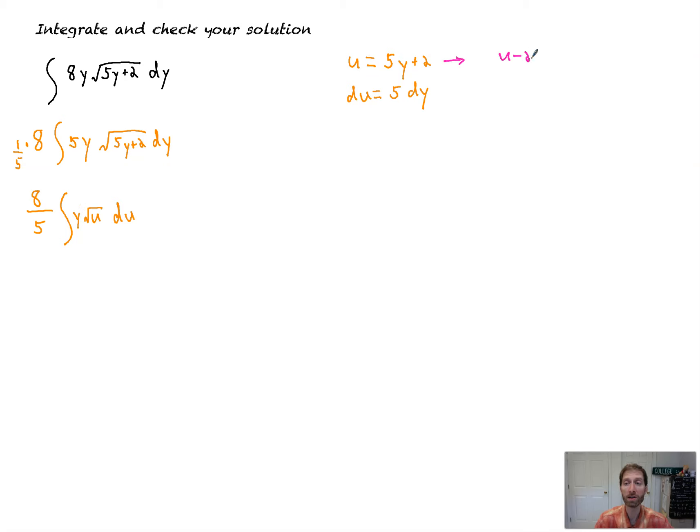So, u minus 2 is equal to 5y, and then we divide both sides by 5. So, you'll have u minus 2 over 5 equals y. By doing this, we can now directly sub y in for something completely in terms of u. Very nifty step there. So, I've got that 8 fifths times, the y is equal to u minus 2 over 5 times, I'm going to write this as u to the 1 half, du.